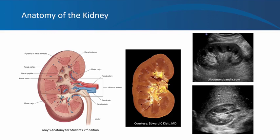Each kidney consists of an outer cortex and inner medulla organized into pyramids. Extensions of the renal cortex project in between the renal pyramids — these are called columns of Bertin, and they are completely normal. It's important to know they exist because sometimes they can become hypertrophied and mimic a mass, so you need to know what is normal to distinguish from a renal mass.